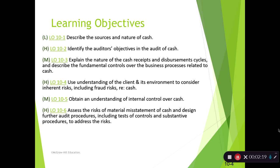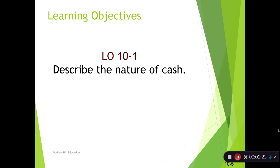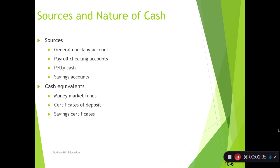Notice there are different priorities I'm going to place on each relative to testing. Understanding the nature of cash is low priority in the sense that you've talked about cash a lot before, so I'm not going to spend a lot of time on it. But obviously we need to understand where we get the cash account from — all the bank accounts the firm has, whether it's general-purpose checking accounts, payroll checking accounts, petty cash, savings accounts. Those are all sources of cash. And then we also have cash equivalents: money market funds, CDs, and other short-term liquid savings vehicles.